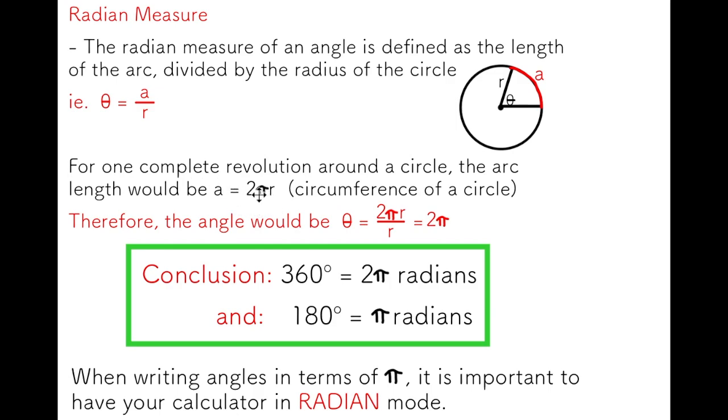The arc length would be 2πr. Now if I substitute this arc length for a, you'll see that these r's cancel out, and my angle would be 2π.